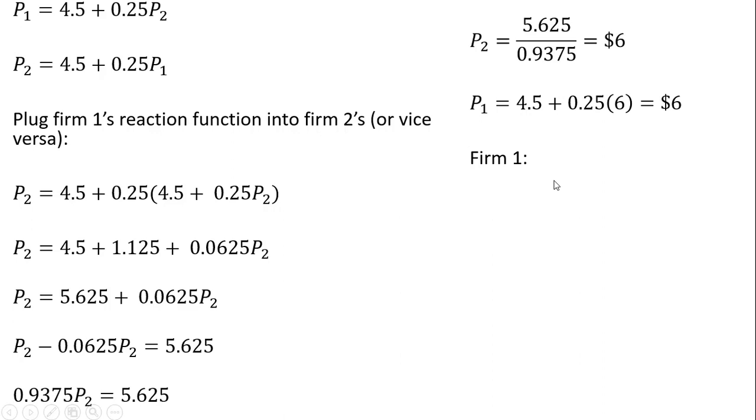We can get the quantity. We could go to firm 1's demand and plug in those respective prices. And firm 1 will produce 800 units of output. Likewise, doing the same thing for firm 2, taking these prices, plugging it into firm 2's demand equation, firm 2 will also produce 800 units of output. Okay, that's it. I hope you found this video helpful.